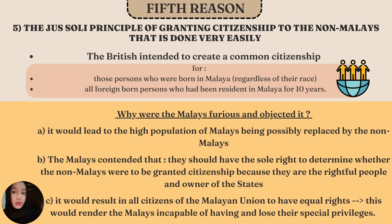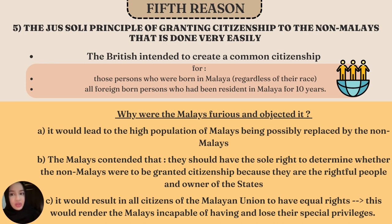The last reason was the jus soli principle of granting citizenship to non-Malays very easily. The British intended to create a common citizenship granted to all persons born in Malaya regardless of race, and to all foreign-born persons resident in Malaya for 10 years. Malays objected because it could lead to the high Malay population being overtaken by non-Malays. Since the Malays regarded themselves as the rightful owners of the land, they contended they should have the sole right to determine non-Malay citizenship. Granting equal citizenship to non-Malays would result in all citizens having equal rights, rendering Malays unable to retain their special privileges.